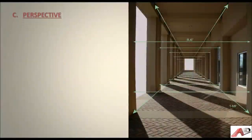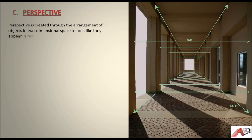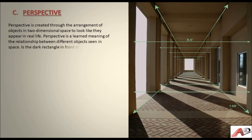Perspective is created through the arrangement of objects in two-dimensional space to look like they appear in real life. Perspective is a learned meaning of the relationship between different objects seen in space. For example: is the dark rectangle in front of the circle or beside the semicircle?